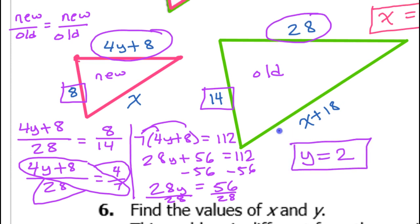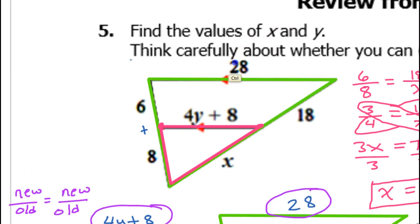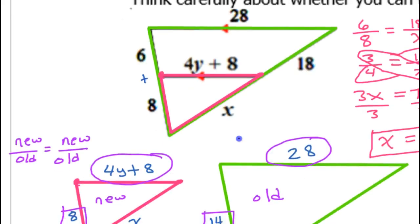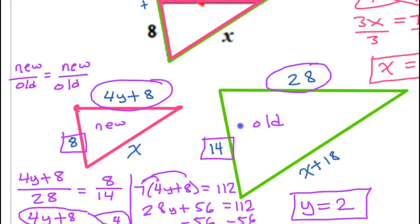Again, we could not do the mid-segment theorem and just double this to equal that, because this is not a mid-segment. And we could not use the side-splitter theorem because it only applies to the sides, not the parallel parts. So you have to fall back on your good old-fashioned similar triangle skills.